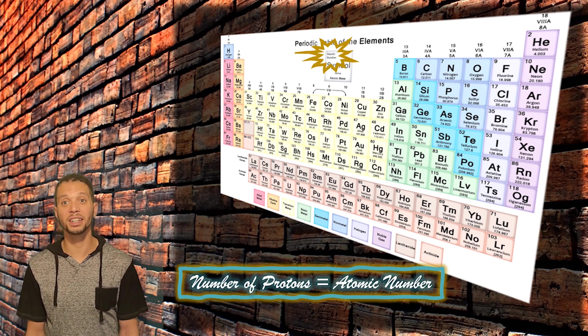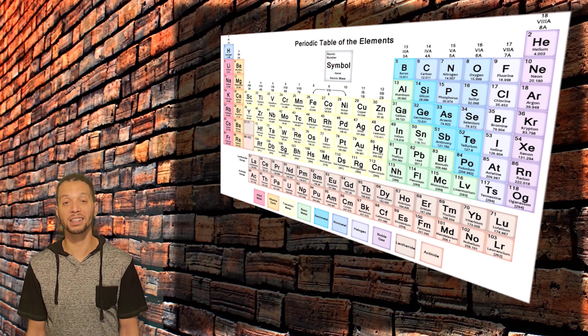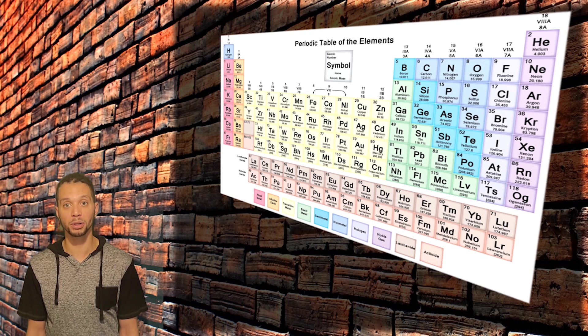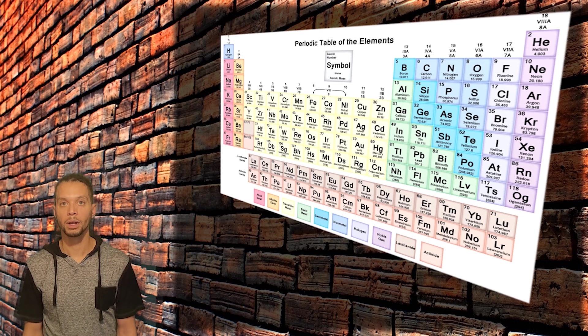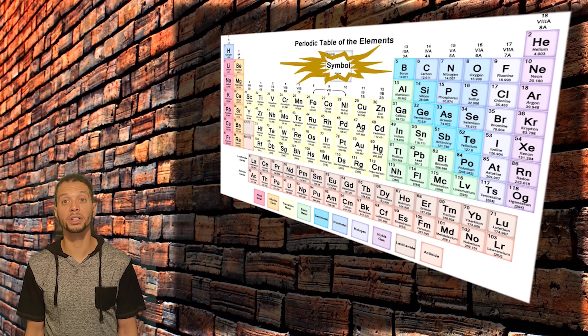Each element is given a unique chemical symbol, which always has a maximum of two letters with the first of those letters being capitalized. The symbol is in the center of each box, and the name for that element is usually underneath the symbol.